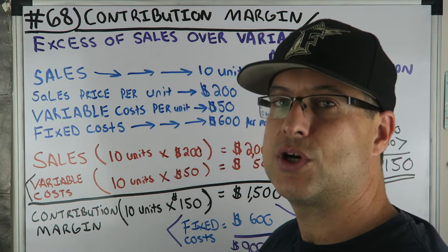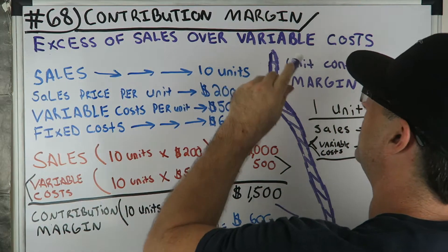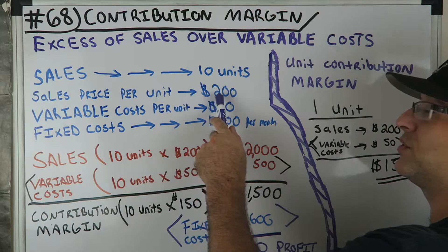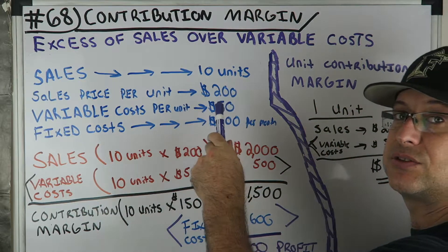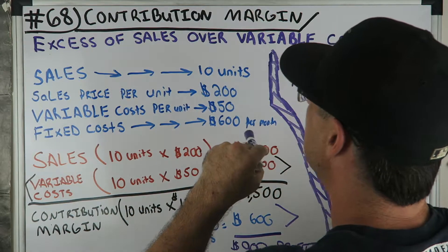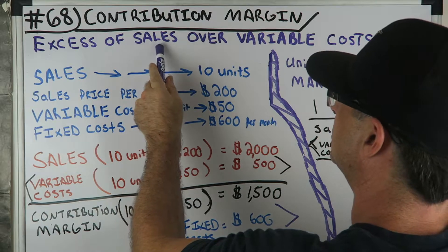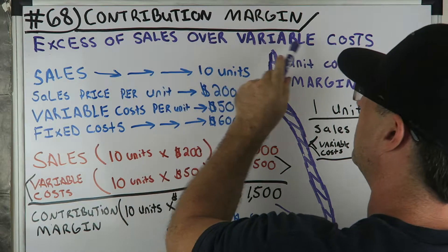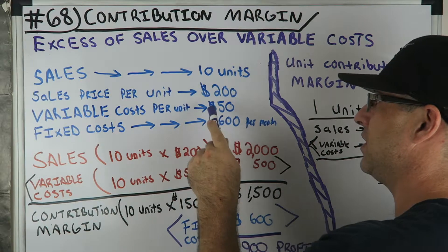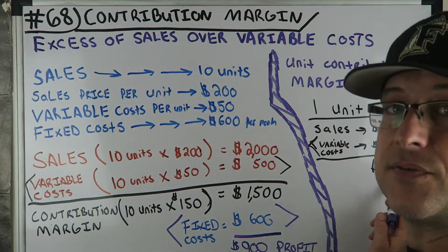Contribution margin — what is the definition of it? It's the excess of sales over variable costs. We have a sales price of $200 per tax return. So excess of sales over variable costs — variable costs are $50, giving us $150.